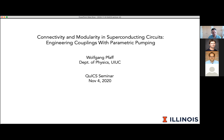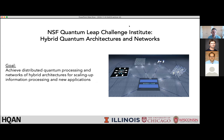What I'll be talking about is an overview of what's going on in the field — how to improve connectivity and modularity in superconducting circuits, in particular using parametric interactions, engineered parametric interactions that make use of Josephson junctions. This is part of a larger focus, and I'm going to sneak some advertisement in here.